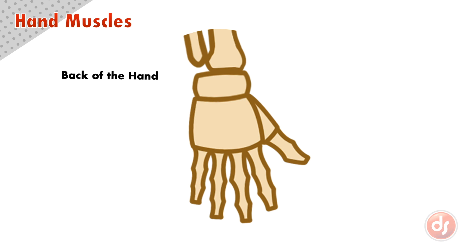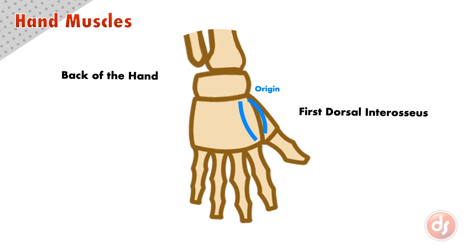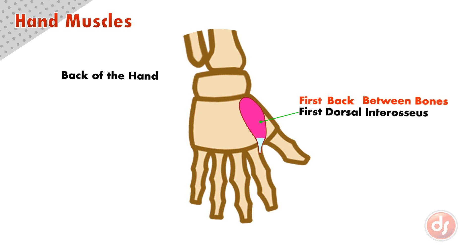On the back of the hand, we have a clear muscle shape on the surface — it is the first dorsal interosseous. It originates on the inside of the index finger and thumb metacarpal bones, and inserts into the base of the first phalange of the index finger on the outer edge. Dorsal refers to the back side. Interosseous means between bones, and it's between the first set of fingers. So the name tells us that the muscle is making up the gap between the thumb and index finger.